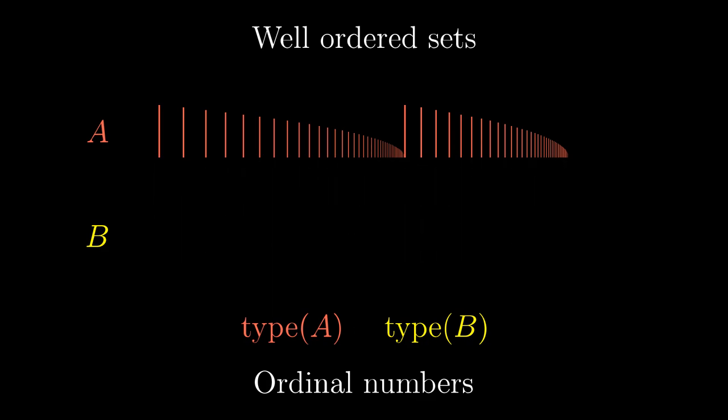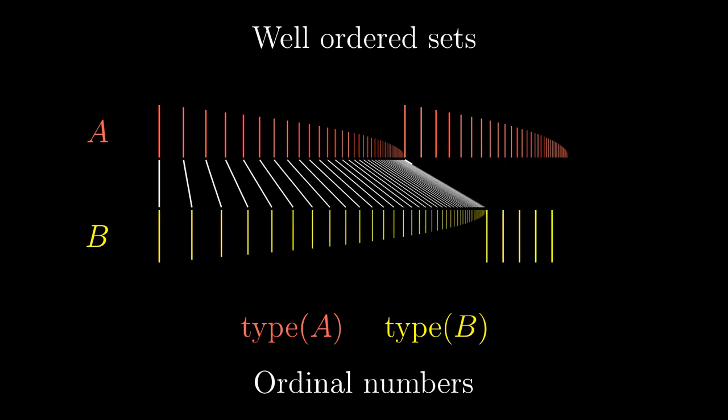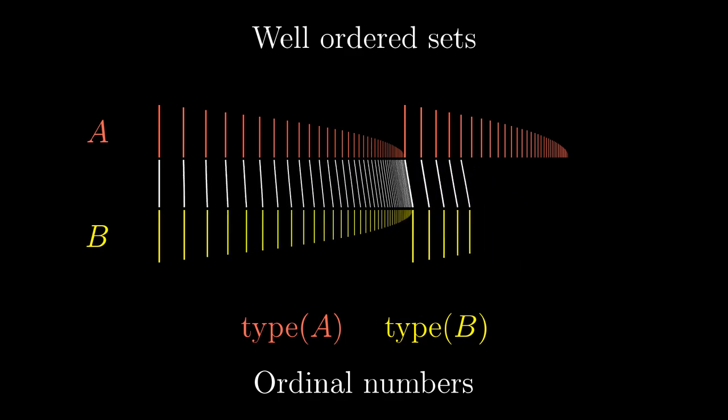If, on the other hand, we match the set B just with a proper initial segment of A, we say that the order type of A is bigger than the one of B.